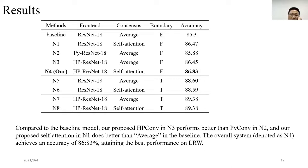We list the results of all systems. Compared to the baseline model, our proposed HPConv in N3 performs better than PyConv in N2, and our proposed self-attention in N1 does better than the average in the baseline. The overall system, noted as N4, achieves an accuracy of 86.83 percentage, attaining the best performance on the LRW.